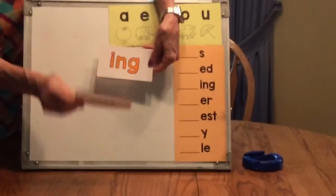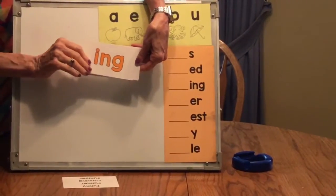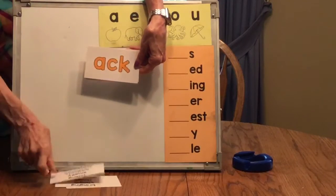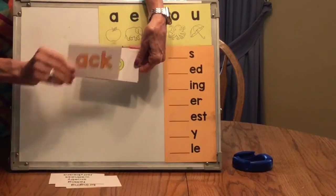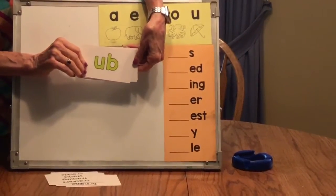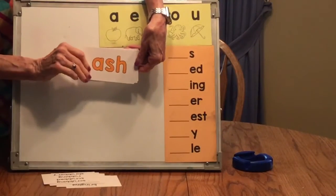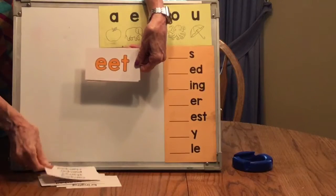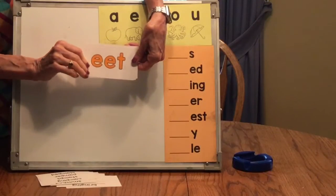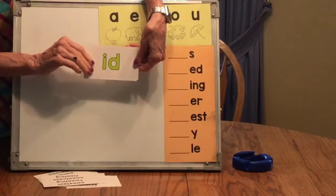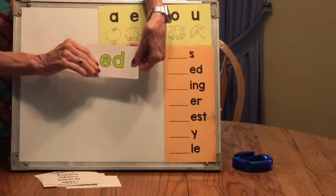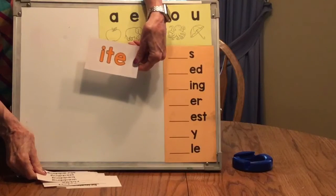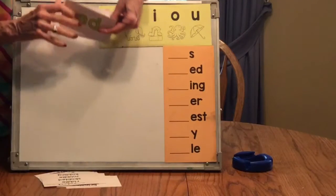Un, un, un. Ing, ing, ing. L, L, L. Ack, ack, ack. Ubb, ubb, ubb. Ash, ash, ash. Amp, amp, amp. Two vowels. Eat, eat, eat. Id, id, id. Eight, eight, eight. Alright, those are the ones we're working on.